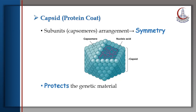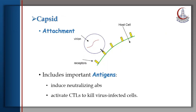Covering the genome, we have the capsid or the protein coat, which encloses the genome. It's formed of subunits named capsomeres. The arrangement of these subunits is responsible for the symmetry or the shape of the virus. Surrounding the genome is important for protecting the genetic material from the nucleases of the cell. Also, the capsid is important for attachment to the host cell receptor. Being a protein coat, it includes important antigens responsible for inducing neutralizing antibodies and activating cytotoxic lymphocytes to kill virus-infected cells.